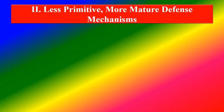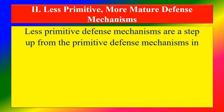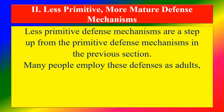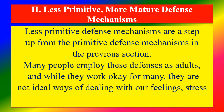Second: less primitive, more mature defense mechanisms. These are a step up from the primitive defense mechanisms. Many people employ these defenses as adults, and while they work okay for many, they are not ideal ways of dealing with our feelings, stress, and anxiety.